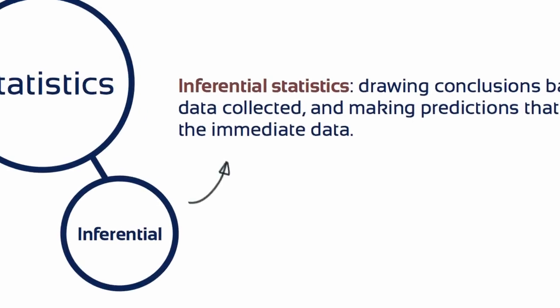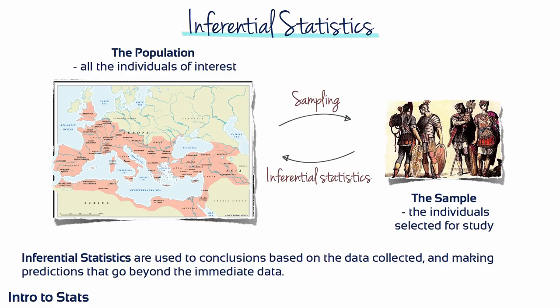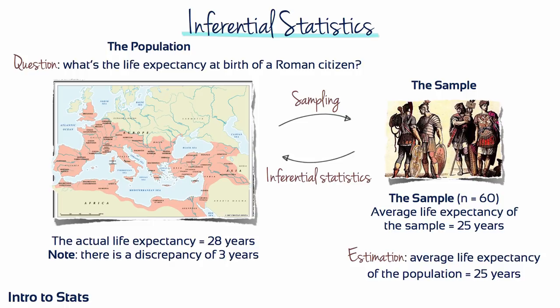Now let's take a closer look at inferential statistics. Inferential statistics consist of techniques that allow us to study samples and then make generalisations about the populations from which they were selected. Sticking with 1st century Romans, let's say we wanted to measure how long a typical Roman citizen lives. Rather than determining that for millions of people, we could select a smaller sample of 60 individuals and calculate their average life expectancy. The average of 25 years calculated from the sample of 60 forms our estimate for the whole Roman population.